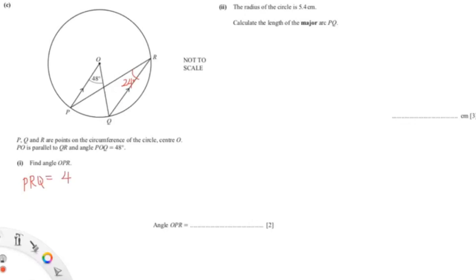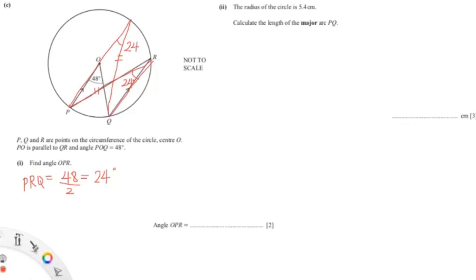We can also conclude that the angle at the center is twice the angle at the circumference subtended by the same arc. Drawing a line straight through PQ shows another circle theorem — this triangle is isosceles, so the base angles are both 24 degrees. This means OPR equals 24 degrees.